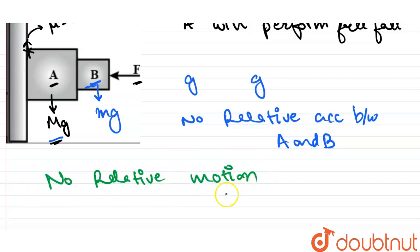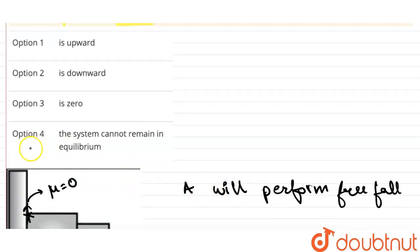So there will be no frictional force, and the system will not be in equilibrium because both A and B are performing free fall motion. So our answer is: the system cannot remain in equilibrium.